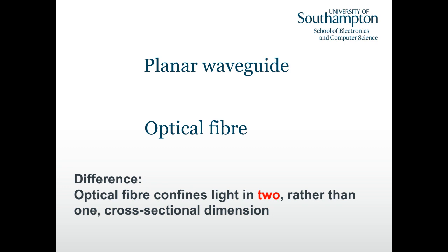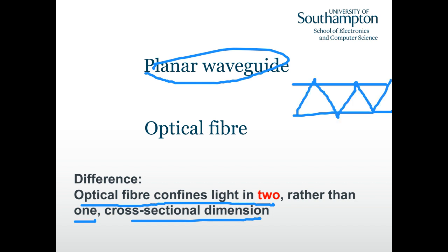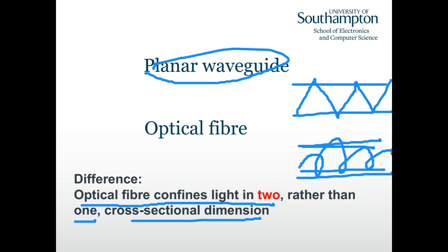An important conceptual point: optical fiber confines light in two cross-sectional dimensions, not just one. The planar waveguide we analyzed is 2D. In a real 3D fiber the light can spiral down the core. What we normally do is project the 3D spiral path onto 2D and then apply Snell's law and the Fresnel formula.